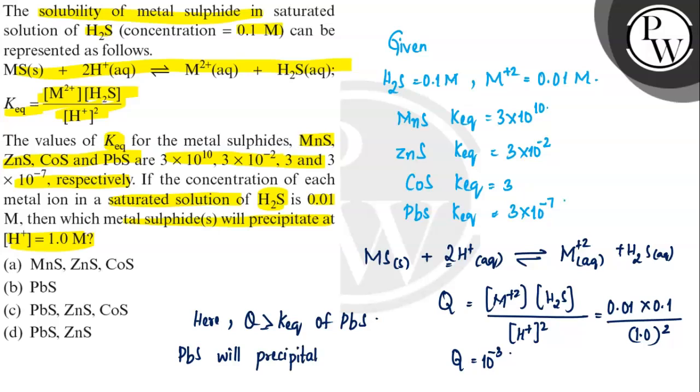PbS will precipitate at H+ equals 1 molar, which is option B. PbS is the correct answer. I hope you understand it well, all the best.